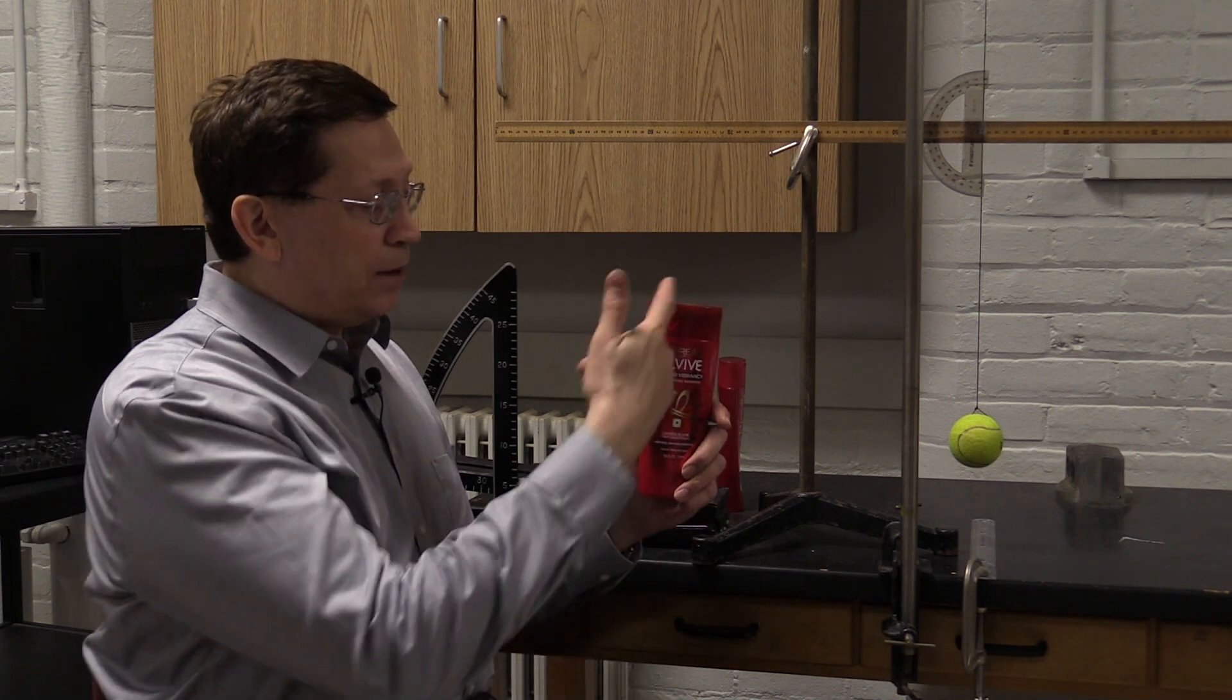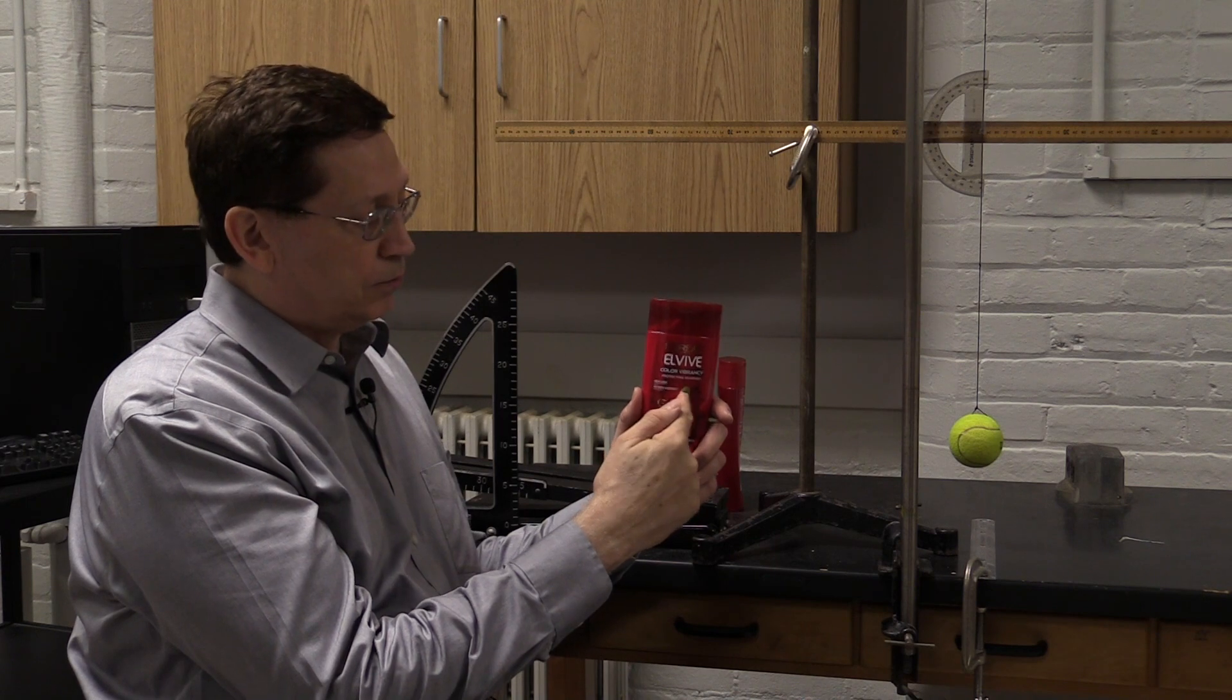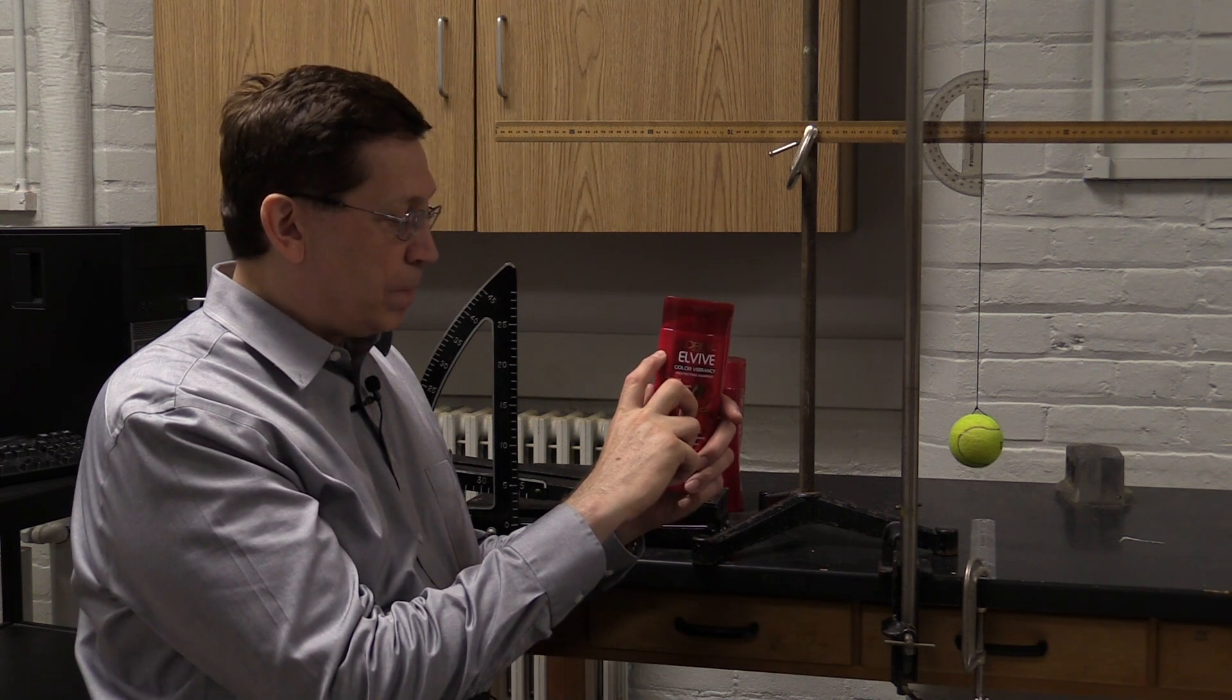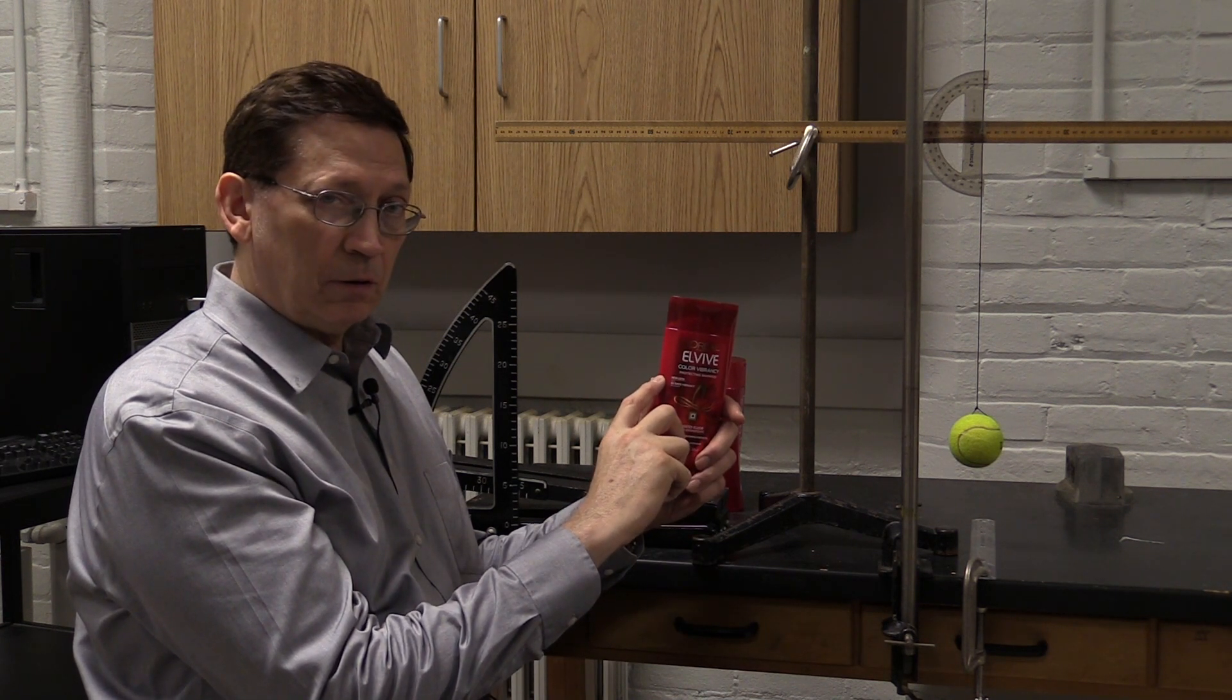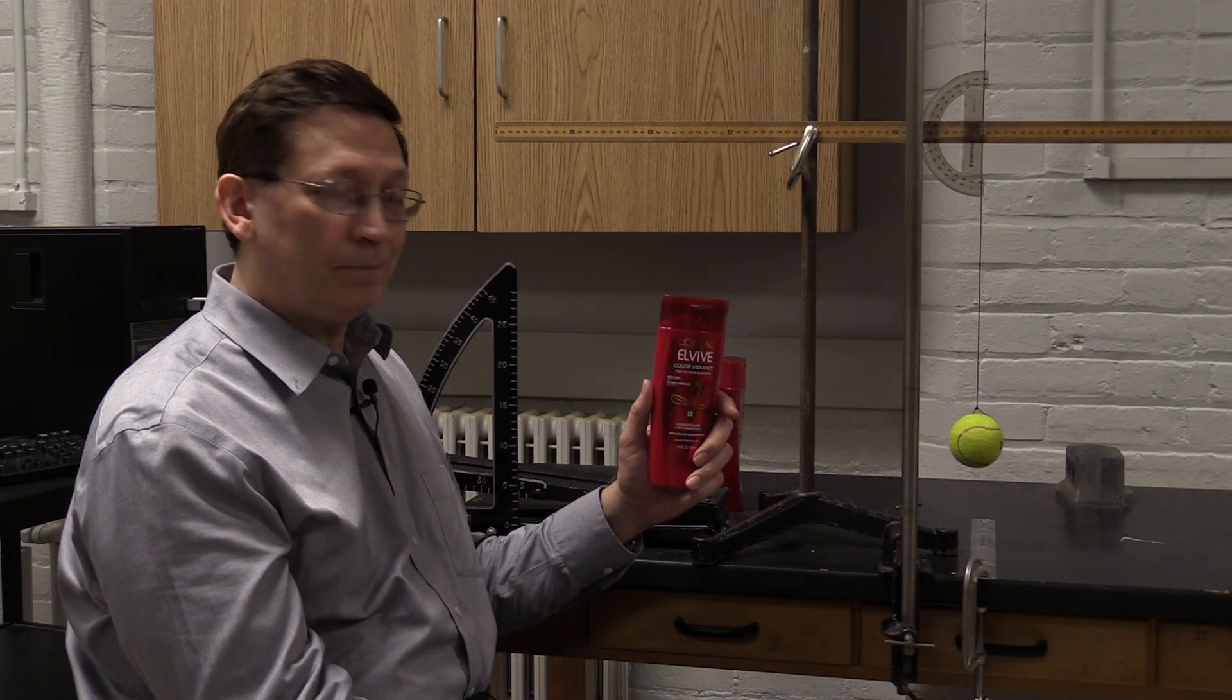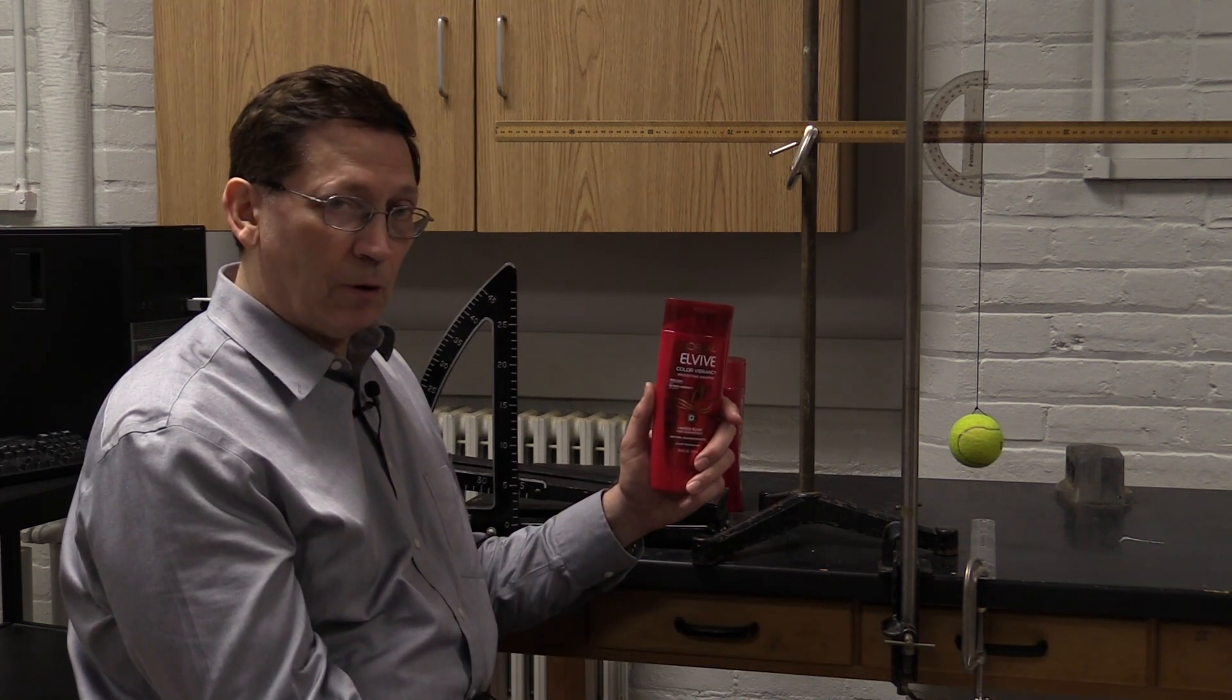When the bottle starts out full, the center of mass is about where the center of the liquid is, which is pretty high in this bottle. As we use up the liquid, the center of mass becomes lower and lower, and that helps the bottle become more stable and more difficult to tip over.